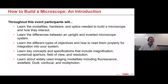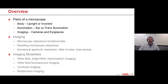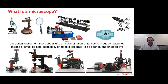Other details about more specific methods will be in later webinars. We're going to start with the parts of a microscope, including the body and different geometries, illumination methods, and imaging. So first off, what is a microscope? At a fundamental level, a microscope is just something that helps you see very small things more easily.